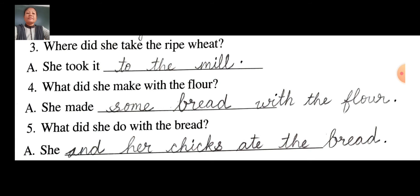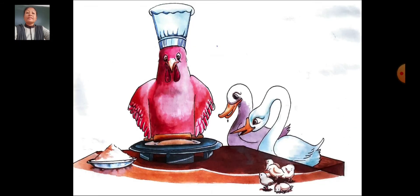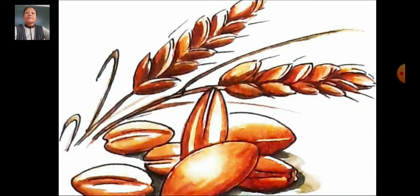Third question: Where did she take the ripe wheat? Here, 'she' is the little red hen. Answer: She took it to the mill. She took it to the mill. You have to start with a capital letter and don't forget to put a full stop.